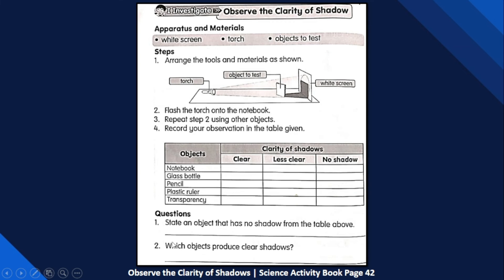Finally, number 2: Which objects produce clear shadows? There are two. The notebook and pencil. The shadows are very clear, so the answer here is notebook and pencil.